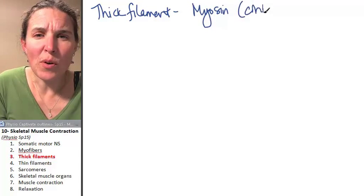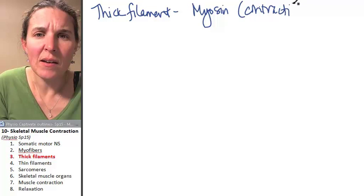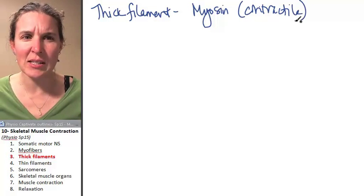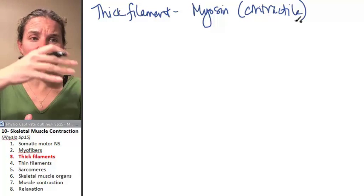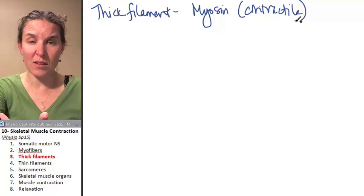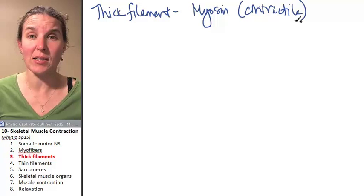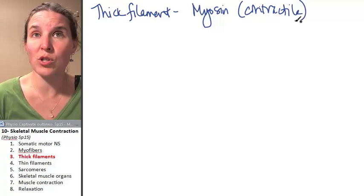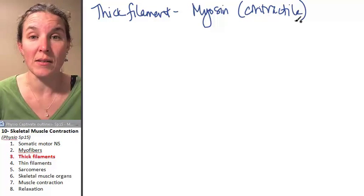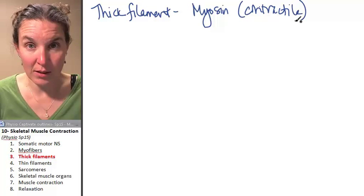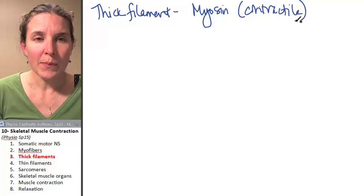It's important to recognize that it's contractile because that's the whole point, right? The muscle cell contracts. And so if you don't have a contractile protein, then the muscle cell isn't going to contract. Shorten.